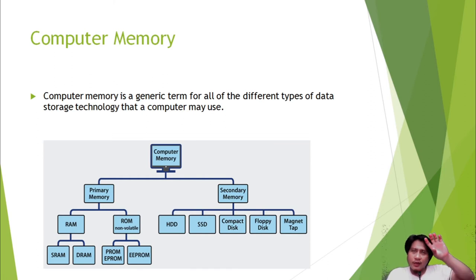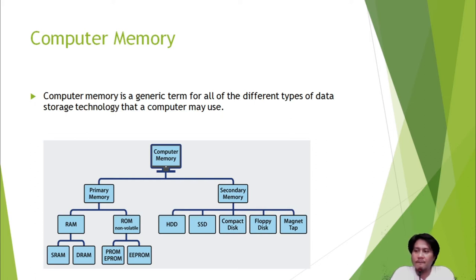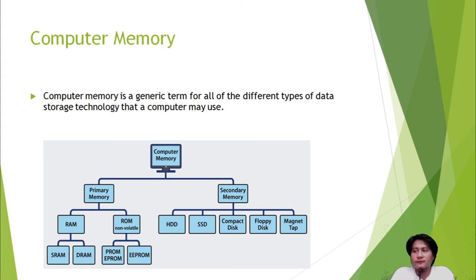Under secondary memory, examples include HDD or hard disk drive, SSD or solid state drive, compact disc, floppy disk, and magnetic tape. If you are from the 1960s or 70s, you might know floppy disks and magnetic tape. The SSD is the latest type of drive — it is faster than the hard disk drive and works like a flash drive or pen drive.